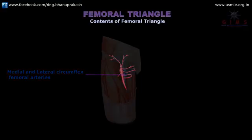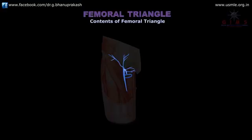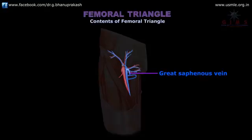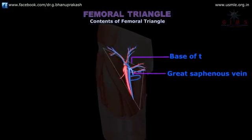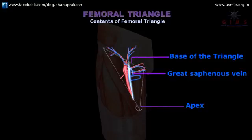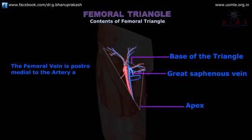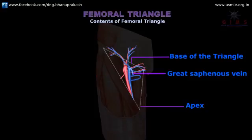The second content is the femoral vein, which receives a tributary directly from the great saphenous vein. The femoral vein accompanies the femoral artery — at the base of the triangle the vein is medial to the artery, but by the time it reaches the apex the femoral vein is posteromedial to the artery. In the femoral triangle the femoral vein receives drainage from the great saphenous vein, the circumflex veins, and also the veins corresponding to the branches of the femoral artery.